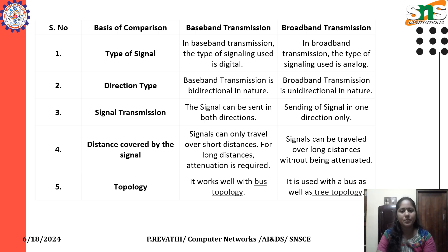Comparison between baseband transmission and broadband transmission. The type of signal used in baseband transmission is a digital signal, whereas in broadband transmission the type of signaling used is analog. Regarding direction type: baseband transmission is bidirectional in nature, while broadband transmission is unidirectional in nature.